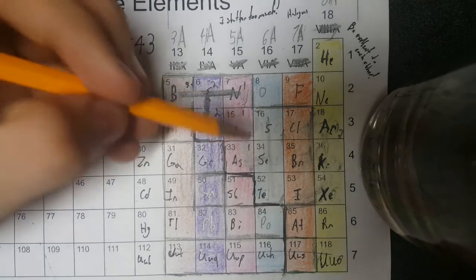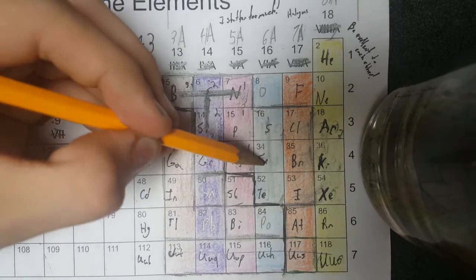Next is the four. The four is phosphorus, sulfur, arsenic, selenium, and tellurium.